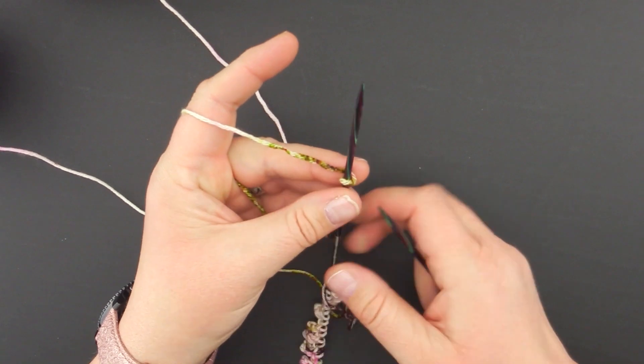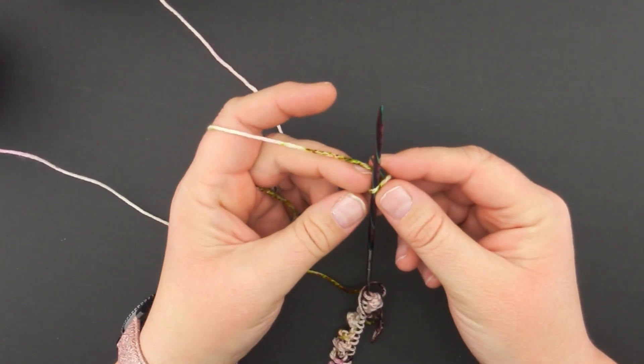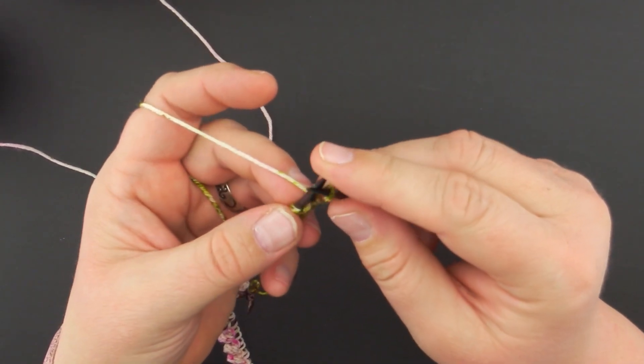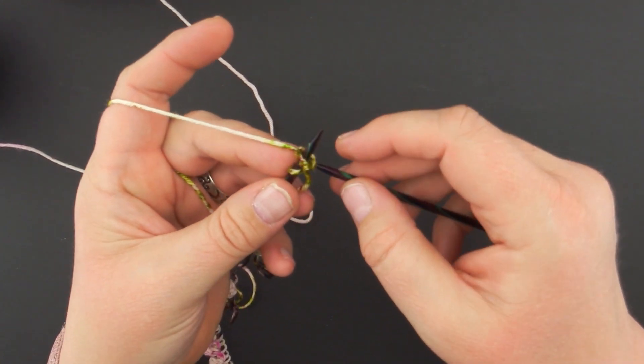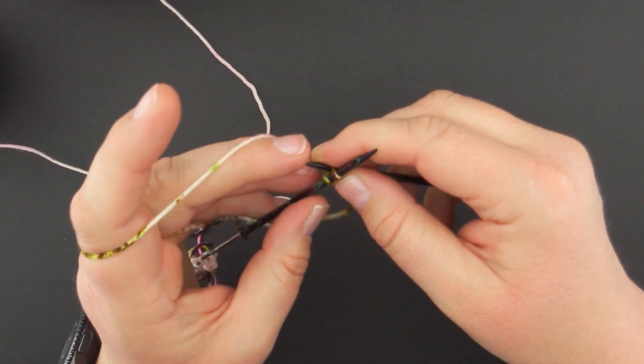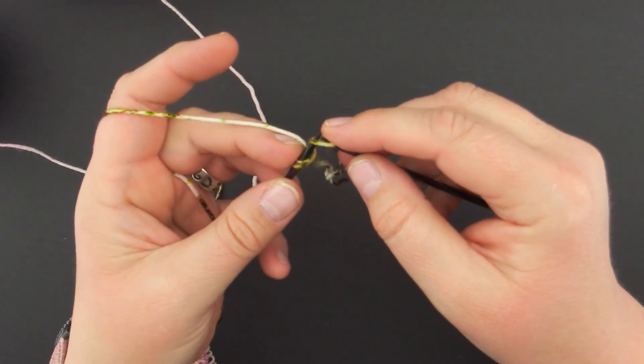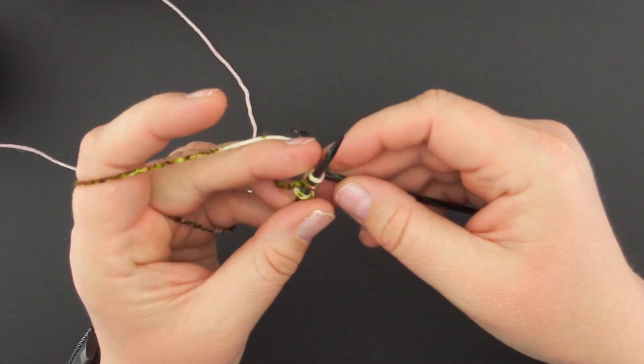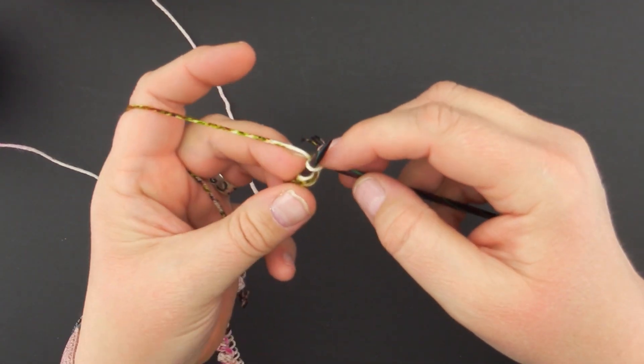My first thing for casting these on is I need to do my one knit stitch through this beginning loop, whether it's a loop or a slip knot. And then I'm going to do two more cable cast on. The cable cast on, you go in between the two stitches and then over the top of your needle, pulling that through.